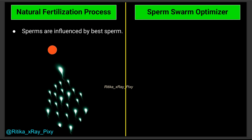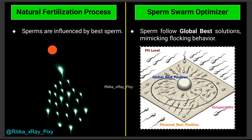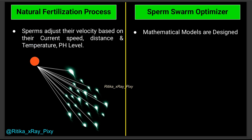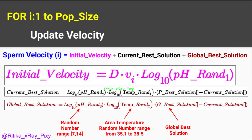In natural fertilization, sperms are influenced by the best sperm nearest to the egg, influencing the movement of others. In this optimizer, velocity and position are adjusted based on the global best position — the best position among all candidates. In natural fertilization, sperm adjust velocity based on their current speed, distance from the egg, and environmental influences like pH and temperature, grouping together to swim more efficiently toward the egg.